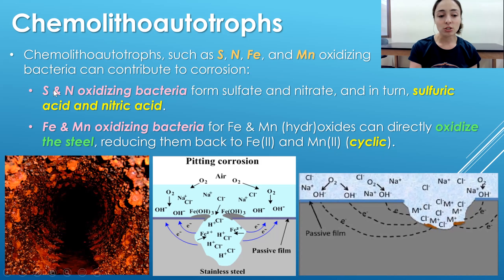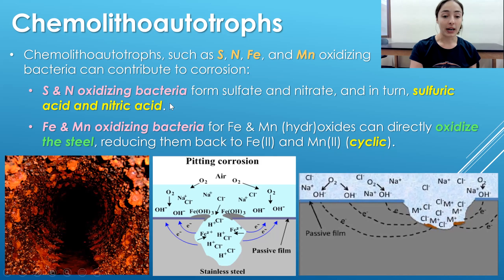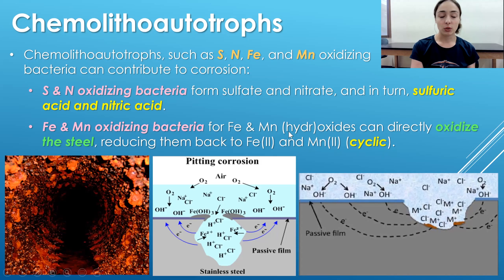Iron and manganese oxidizing bacteria similarly produce oxidized iron and manganese compounds — such as iron hydroxides and manganese oxides — that can directly oxidize steel. When they oxidize the steel, the oxidized iron and manganese compounds are reduced back to iron 2 and manganese 2, making the process cyclic: bacteria oxidize those reduced forms, the oxidized products then oxidize the steel, get reduced again, and the cycle continues. This redox-driven cycle constantly regenerates the bacteria's 'food' compounds.